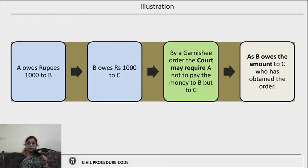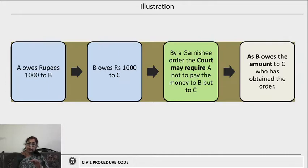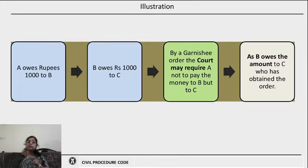Let us look into an illustration. A owes rupees 1000 to B, and B owes rupees 1000 to C. The court may pass a garnishee order requiring A not to pay that amount to B, but to pay it to C, because B owes the amount to C who has obtained that order from the court.